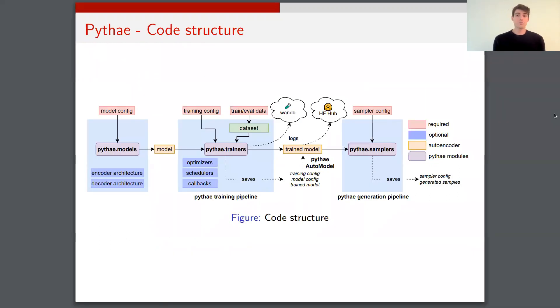So this is the structure of the code. So basically this is a really brick-like structure. So on the left, you have the models that you can choose, and you can define your encoder and decoder architecture. In the middle, you've got the trainers. So the trainers are supposed to be as flexible as possible, because you can define your optimizers, schedulers, and callbacks.